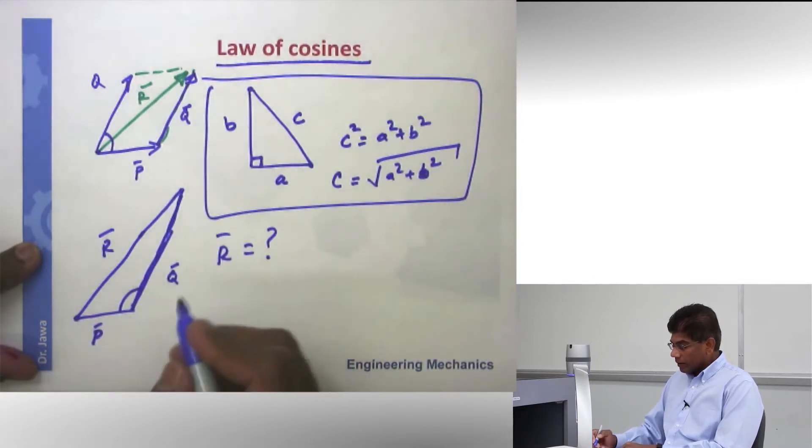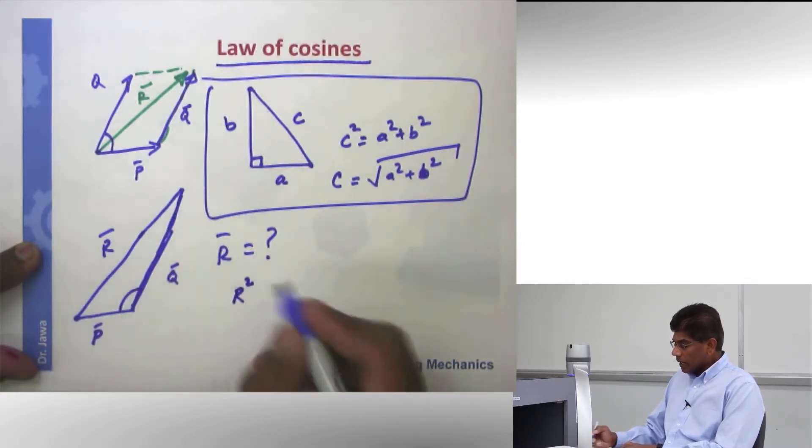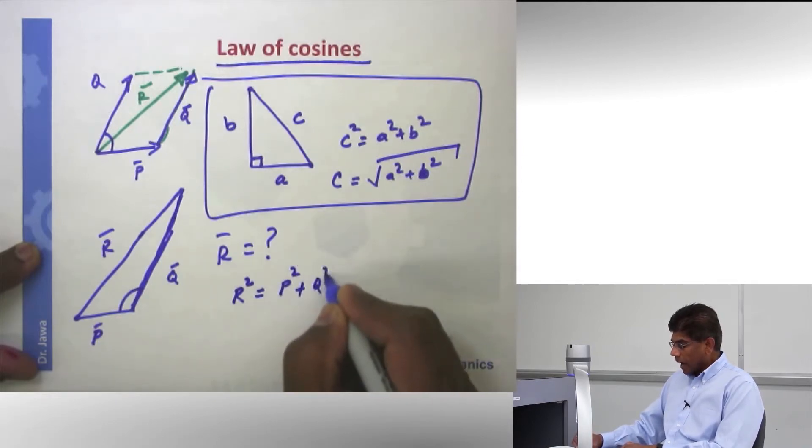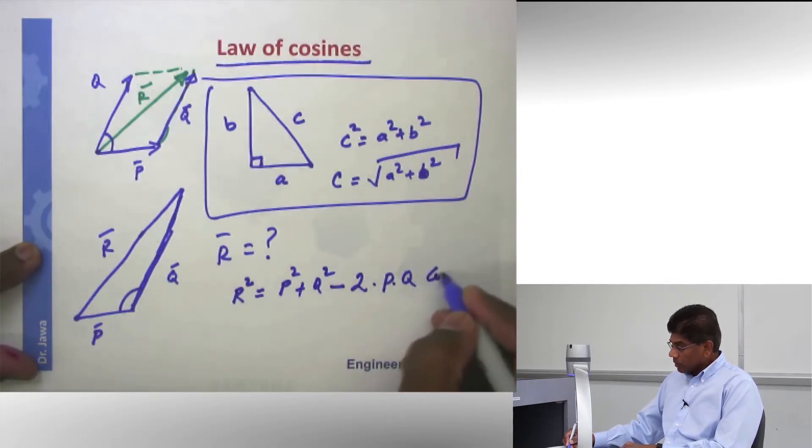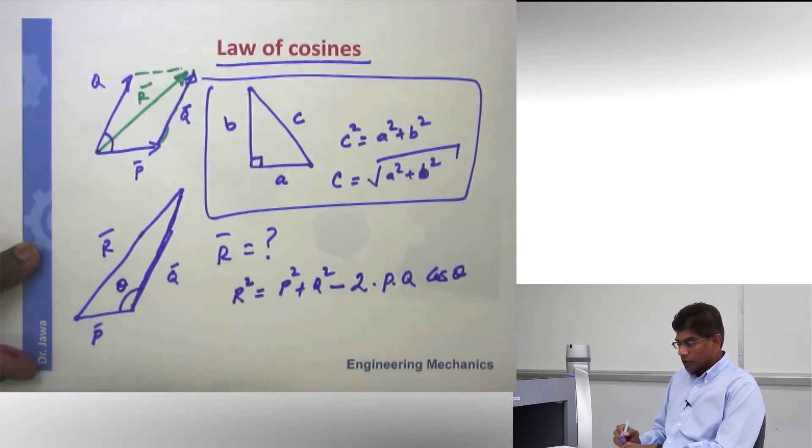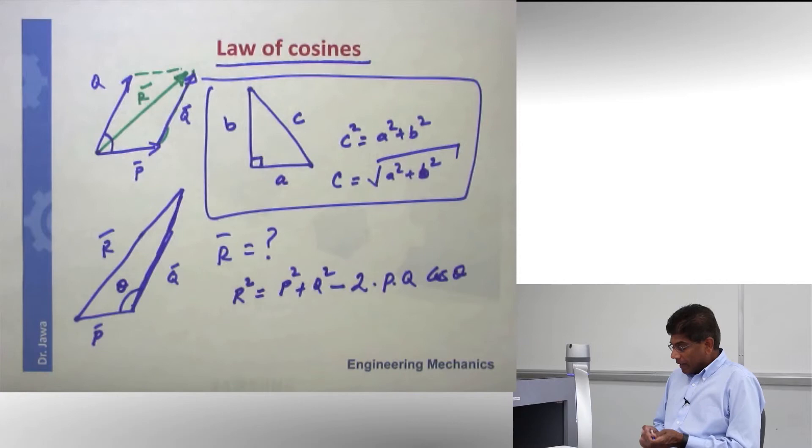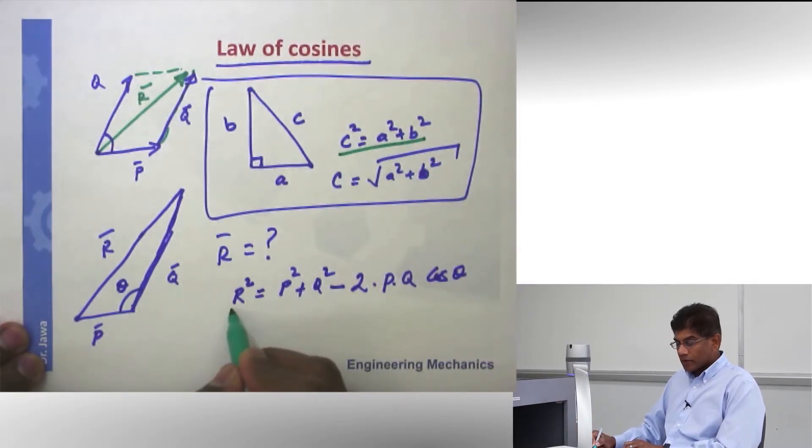Well, in a triangle, R squared, in other words this longest side, is equal to the other two sides squared and added: P squared plus Q squared minus 2PQ cosine theta. These are all magnitudes. And this theta is the angle between the other two sides. I want you to take a closer look at this formula. It is similar to Pythagorean. Instead of C squared, we have R squared, that's our resultant.